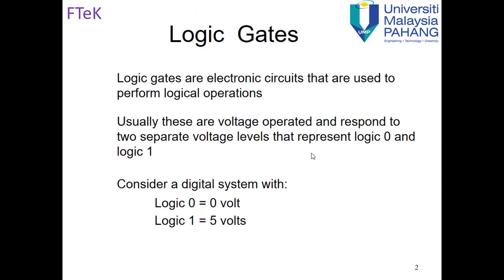So basically, what is a logic gate? A logic gate is an electronic circuit used to perform a logic operation. These gates are electronic devices, and the logic is represented by true and false. True and false corresponds to zero and one.